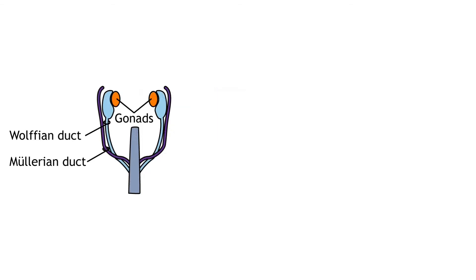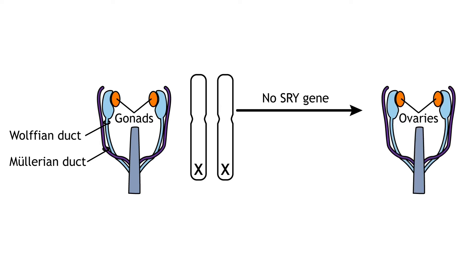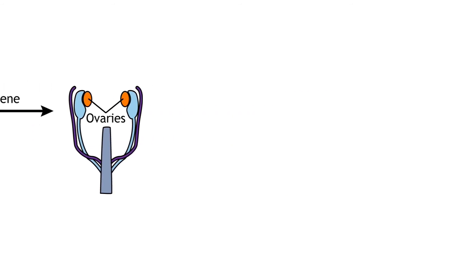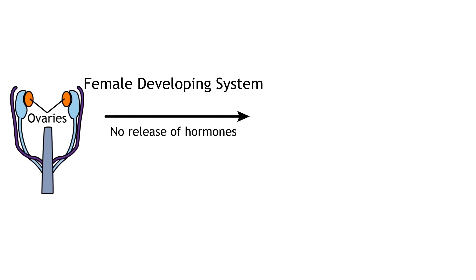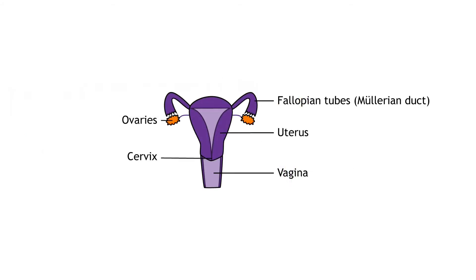Again, the undifferentiated gonadal system is the same for both sexes. In the absence of the SRY gene during the 6th to 12th week of gestation, the gonads become the ovaries. The ovaries do not produce any hormones during development, which causes the Müllerian ducts to become the fallopian tubes, uterus, and vagina, and the Wolffian ducts to degenerate. In the fully developed system, the cervix is the lower part of the uterus, which separates the uterus from the vagina.